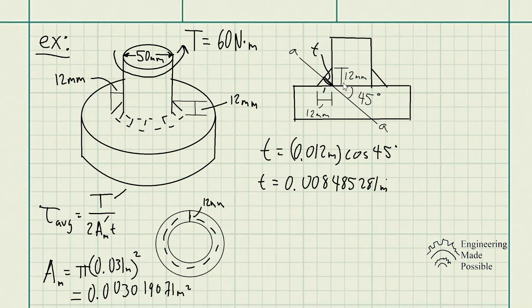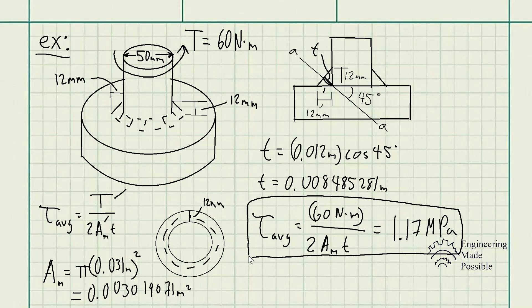And now let's go ahead and plug in all this information into the average shear stress equation. The average shear stress for that fillet weld is 1.17 megapascals. And so this is how you use that average shear stress equation with the mean cross-sectional area and the thickness of that fillet weld to solve for the average shear stress on that weld due to the torque being applied on the shaft.